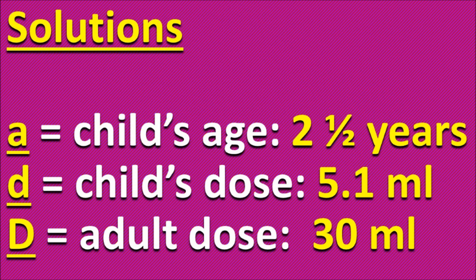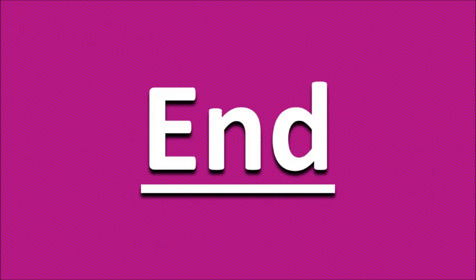So here's our solution. If the child's age is two and a half years old, their dose should be 5.1 milliliters if the adult dose is 30 milliliters. Thanks.